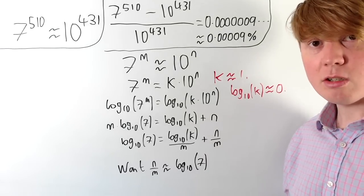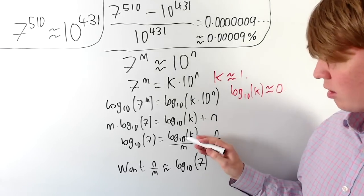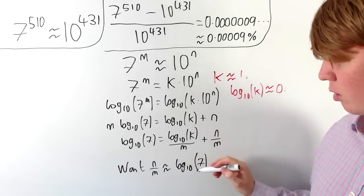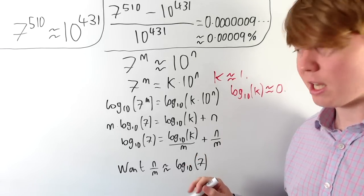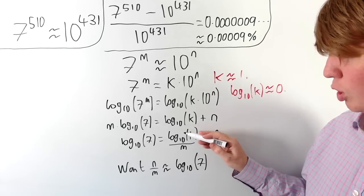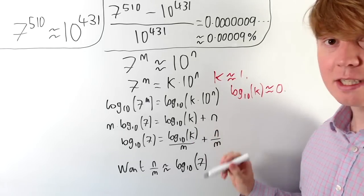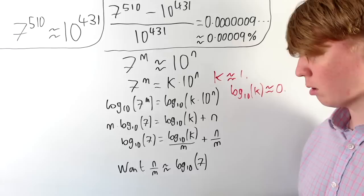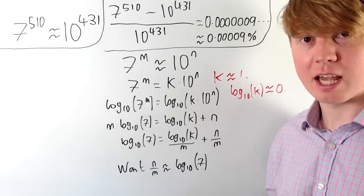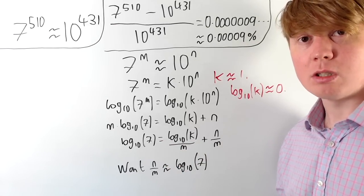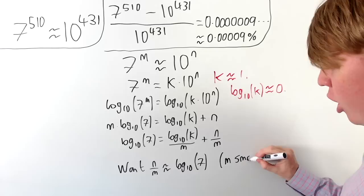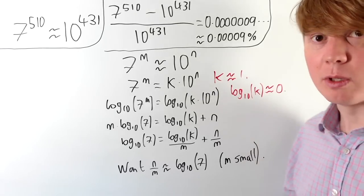But this doesn't guarantee that log base 10 of k will be close to 0, because even if n over m is roughly equal to log base 10 of 7, if m is really big, then the log base 10 of k term could still be quite large. So as well as needing n over m approximately equal to log base 10 of 7, we also want to balance this with having m small.